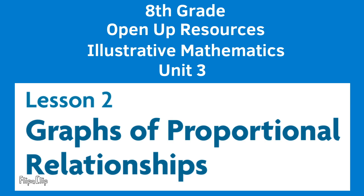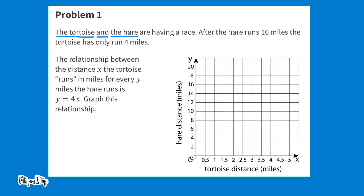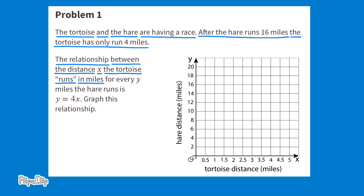Eighth grade Open Up Resources, Illustrative Mathematics, unit three, lesson two: graphs of proportional relationships. Problem number one: the tortoise and the hare are having a race. After the hare runs 16 miles, the tortoise has only run four miles. The relationship between the distance x the tortoise runs in miles for every y miles the hare runs is y equals four times x. Graph the relationship.